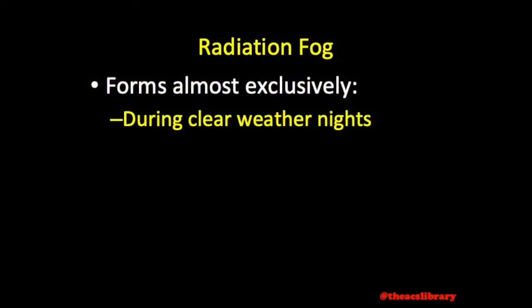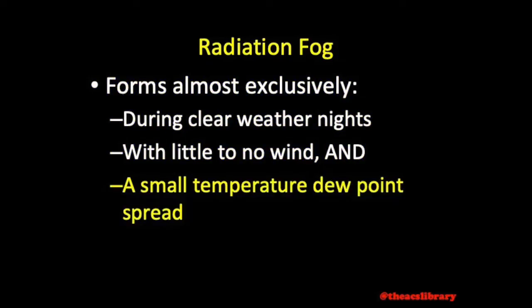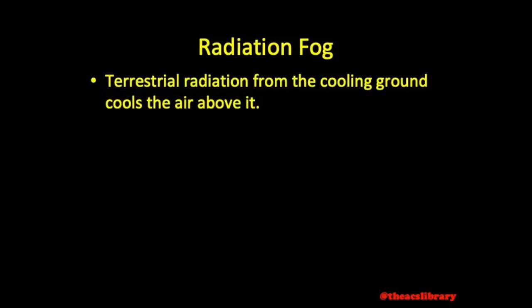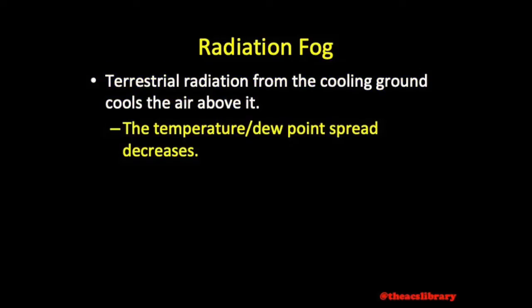Radiation fog forms almost exclusively during clear weather nights with little to no wind and a small temperature-dew point spread over land. As terrestrial radiation from the rapidly cooling ground lowers the temperature of the air immediately above it, the temperature-dew point spread decreases, resulting in fog that may restrict ground view and flight extensively or even completely.